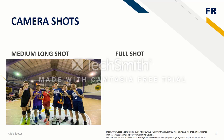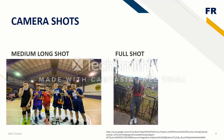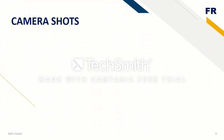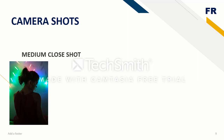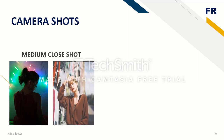Full shot frames the character from head to toes with the subject roughly filling the frame. The emphasis tends to be more on action and movement rather than the character's emotional state. A medium close up shot is a shot that frames the subject from just above their head down to about midway on their torso. The idea of a medium close up shot is that you can still easily register the actor's emotion and facial expressions while also retaining some of the background.